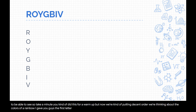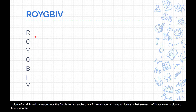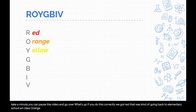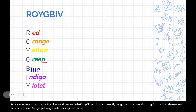I gave you guys the first letter for each color of the rainbow. Take a minute to look at what each of those seven colors are. So if you do this correctly, going back to elementary school art class: red, orange, yellow, green, blue, indigo, and violet.